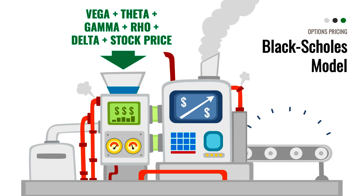All of those variables — the Black-Scholes model, the vega, the theta, the gamma, the rho, the delta, the stock price — all go into the calculation and it spits out the options value. That's how we know what the current market value is when we go to buy and sell those options, which are derivatives of the underlying assets. Ladies and gentlemen, that is the Black-Scholes model, and when you start trading options, you'll clearly understand why this fancy math model did end up winning the Nobel Prize in economics.